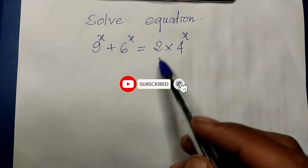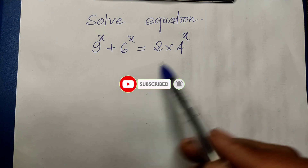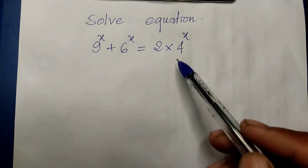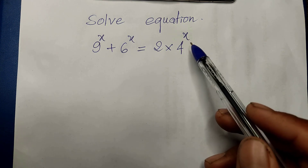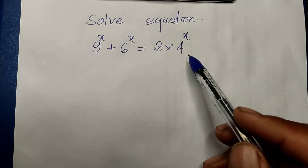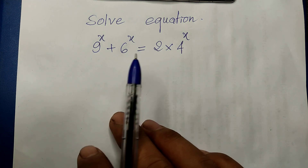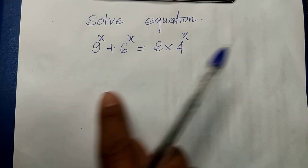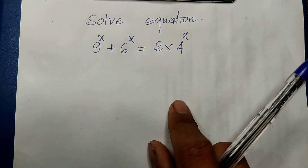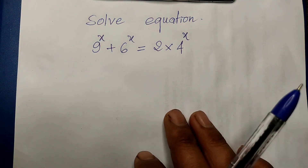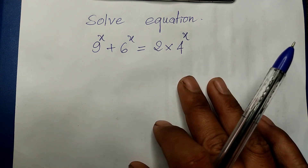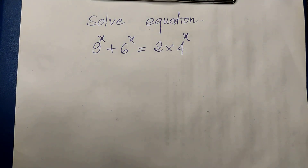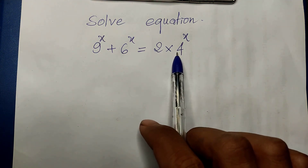To show this exponential equation, we must divide both sides of this equation with 4^h. I show you to divide with 4^h, because 4 we can write as 2 squared.